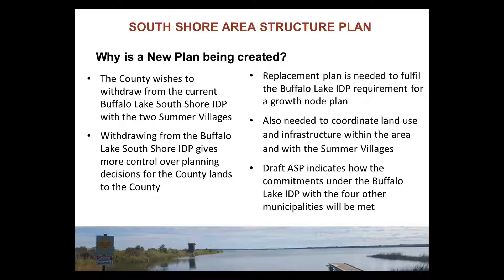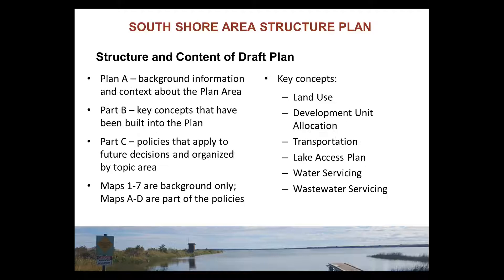The draft document is structured in three major parts. Part A is background information — a snapshot in time that does not set policy. Part B provides narrative on six major concepts that sets the stage for why the policies were written as they are, but is also not policy. Part C contains the actual policy statements, each clearly identified with a number and brief text explanation. Maps 1 through 7 are background; Maps A through D form part of the policies.